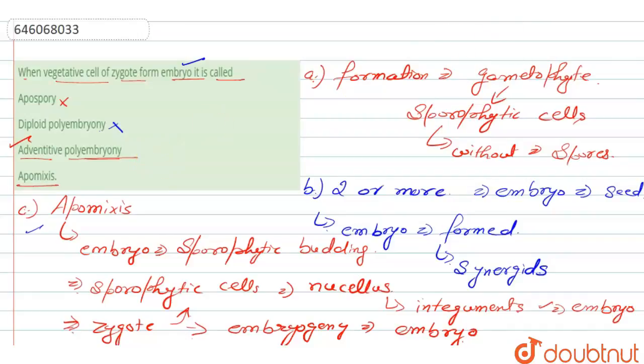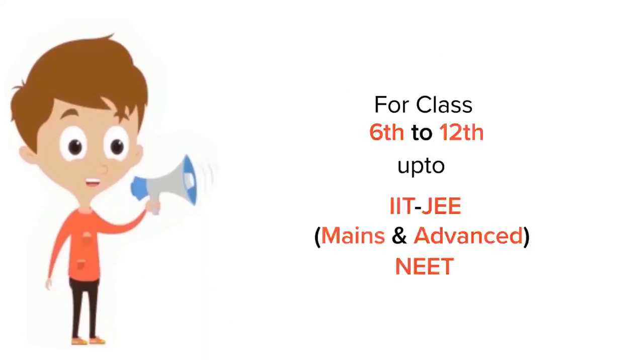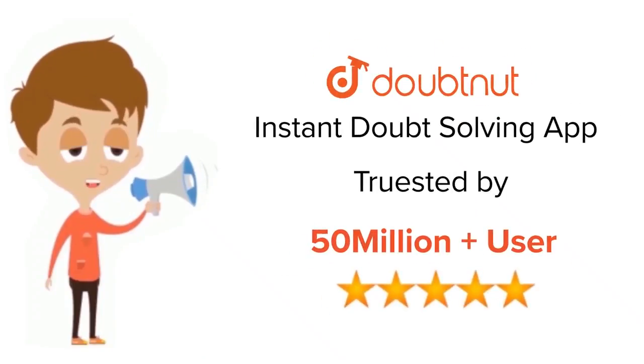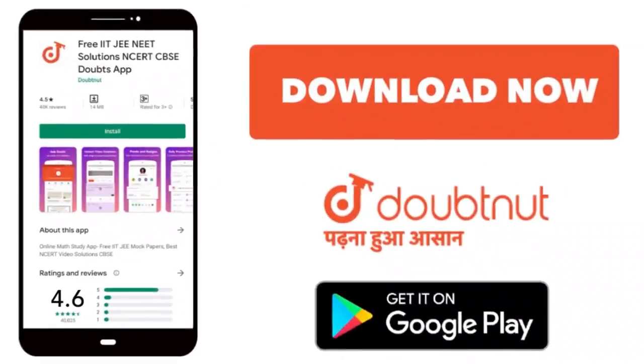From adventative polyembryony. So the right answer for this question is option number three. Thank you. For class 6-12, IIT and NEET level, trusted by more than 5 crore students, download Doubtnet app today.